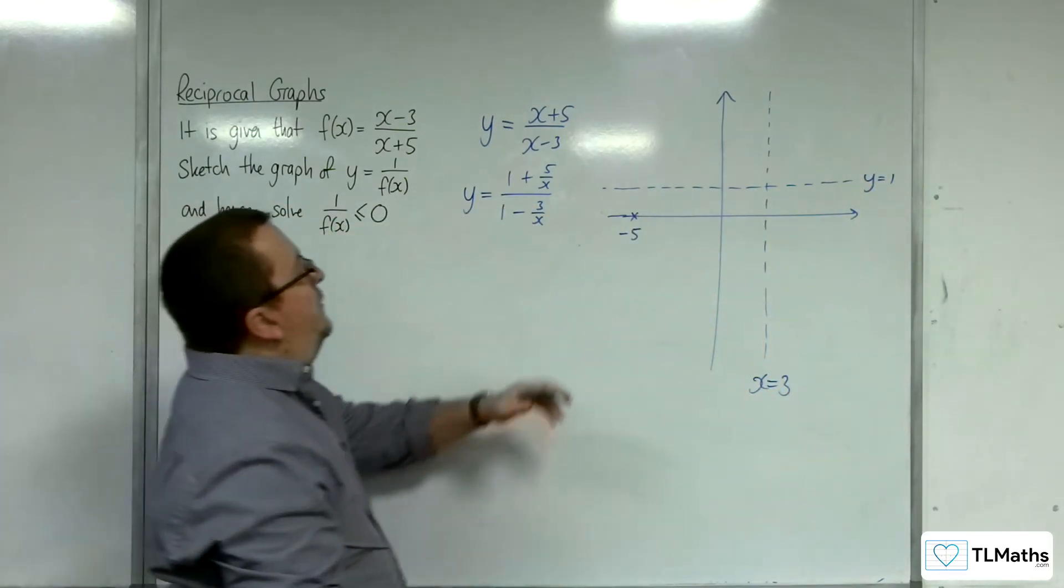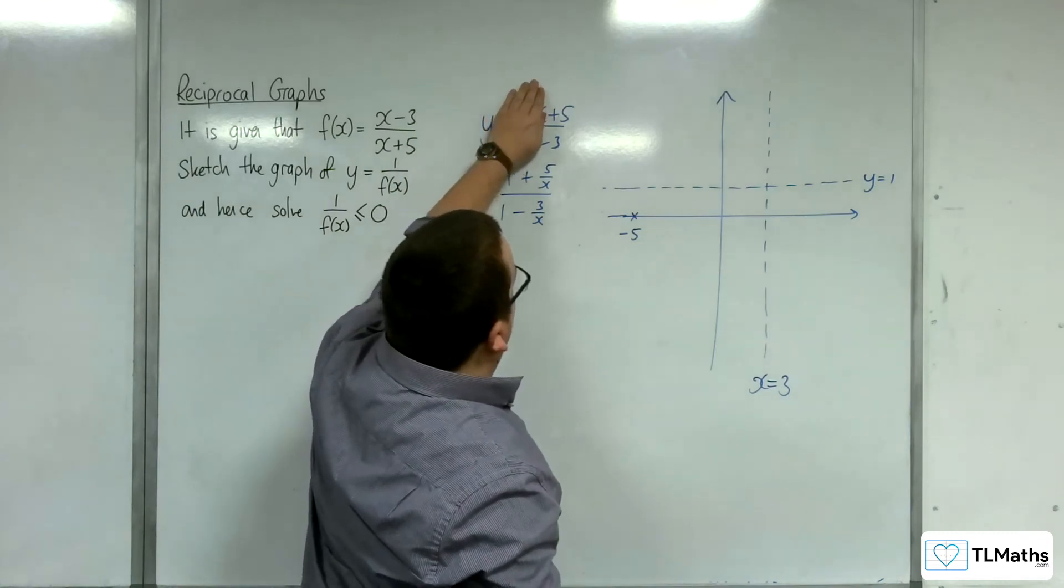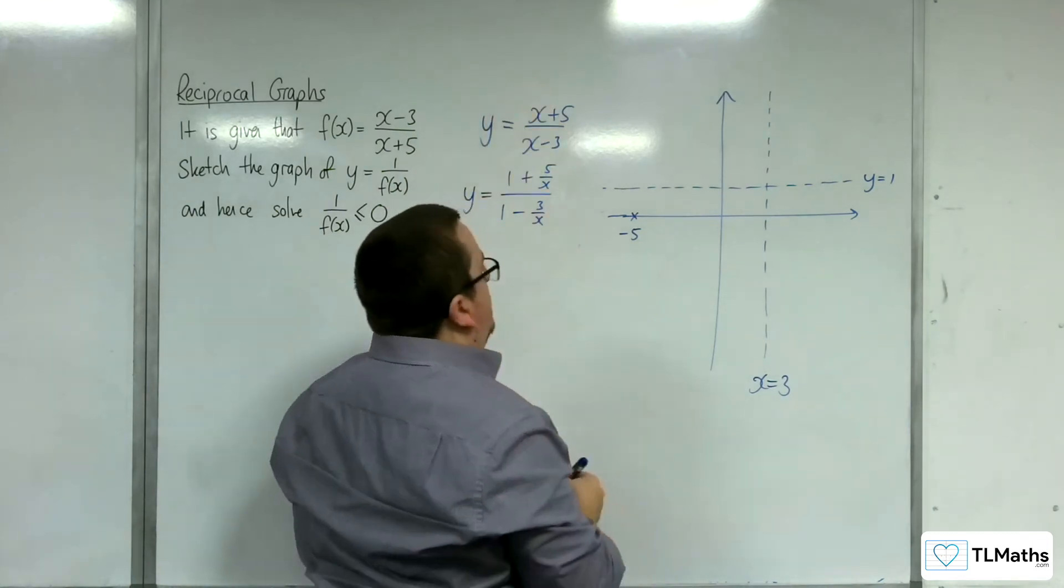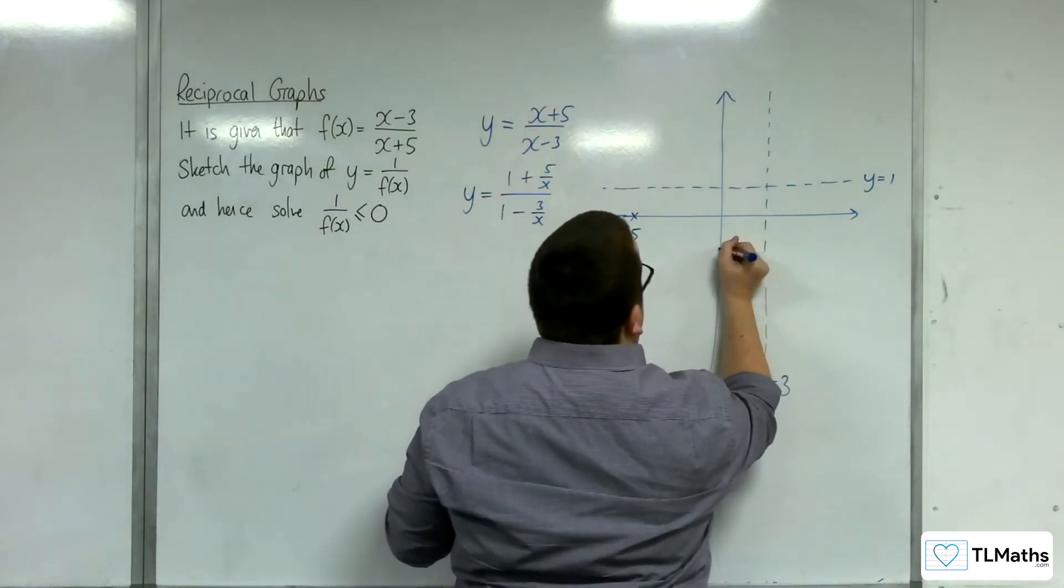Now, how about where it crosses the y-axis? Well, that's when x is 0 and so that will be 5 over minus 3. So, minus 5 thirds.